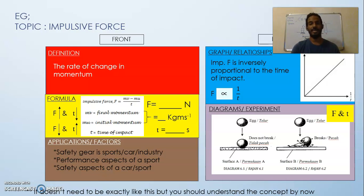And then you got your graphs and relationships there: impulsive force is inversely proportional to the time of impact. And for impulsive force, you guys don't do a specific experiment, but this diagram basically says it all. Like, it is a very popular SPM question to show you that when the surface is soft the egg doesn't break, and when the surface is hard the egg breaks because of the impulsive force acting on the shell of the egg. So this is basically, once again, it does not need to be exactly like this, but you should get the point.